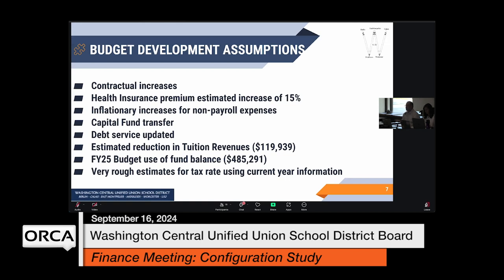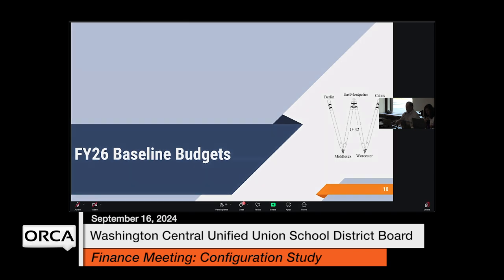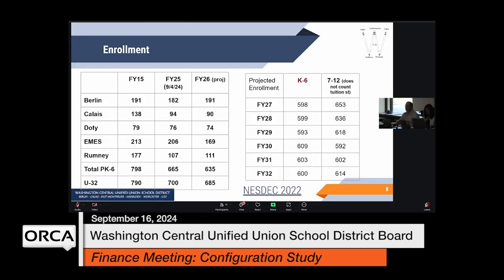There are quite a few assumptions. We have our contractual increases, an estimated 15% increase for health insurance, inflationary increases for non-payroll expenses, capital fund transfer debt service update, reductions in tuition revenues, a reminder that we used $485,000 of our fund balance last year to reduce taxes, and very rough estimates for tax rates using current year information. Our enrollment numbers are there if we need to refer back to them.